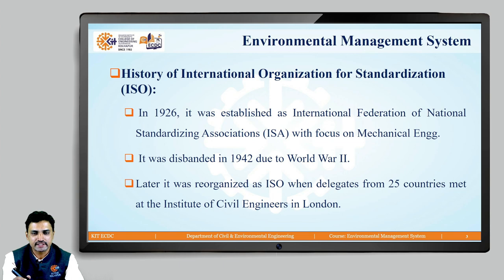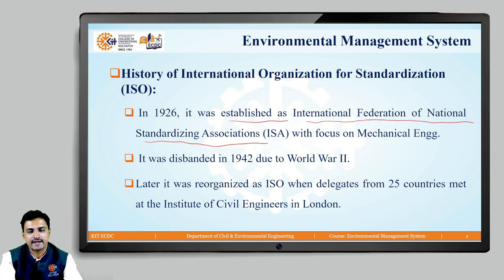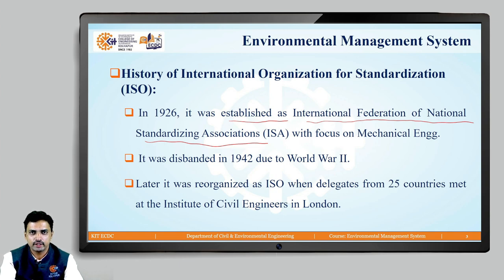In the earlier time, in 1926, it was established as ISA — the International Federation of National Standardizing Associations. At that particular time, its main focus was on Mechanical Engineering. The standardization bodies representing a particular country formed an association for the creation of standards. But during 1942, because of World War II, this organization was disbanded and stopped its operation.